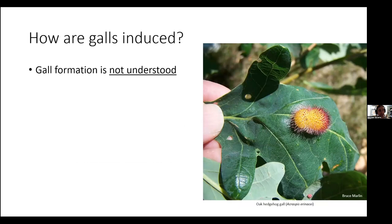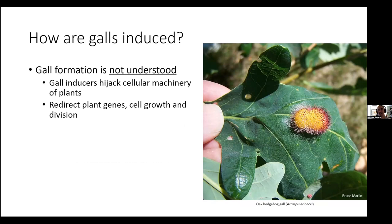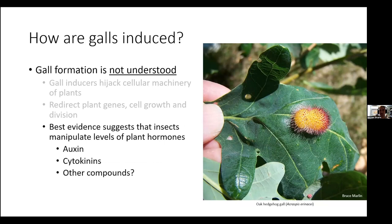All of that said, gall formation is not well understood. We know that gall inducers are hijacking the cellular machinery of these plants, forcing them to do things they normally wouldn't do — redirecting plant genes, cell growth, and cell division. But we don't know how they're doing it. The best evidence suggests the insects, while feeding, are injecting some kind of chemical cue affecting plant hormones like auxin and cytokinins, maybe some other compounds. But we don't really know what those chemicals are. These galls are very different from normal plant tissue, yet we have really no idea what the specifics behind gall induction are.